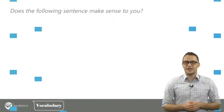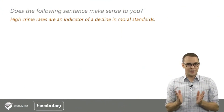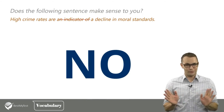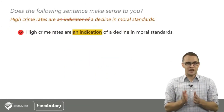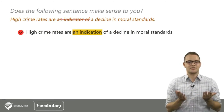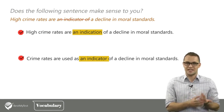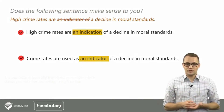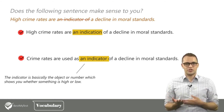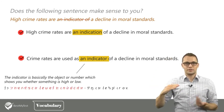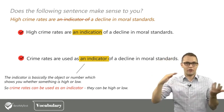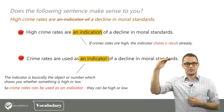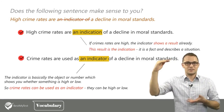Let's have a short quiz. Does the following sentence make sense? 'High crime rates are an indicator of a decline in moral standards.' The answer is no. You can change it to 'High crime rates are an indication of a decline in moral standards,' or 'crime rates are used as an indicator of a decline in moral standards.' Crime rates can be used as an indicator — they can be high, low, or average. But if crime rates are high, the indicator already shows a result, which is the indication — a fact describing a situation.